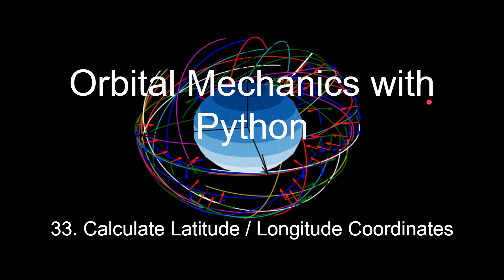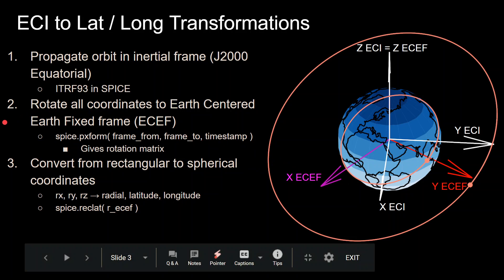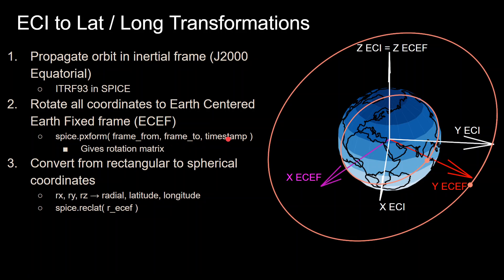This is the 33rd video in this series. I'm going to go over the Python functions you need to calculate latitude/longitude coordinates. As covered in previous videos, this is the whole algorithm: propagate in the inertial frame, then rotate those coordinates into the Earth-centered Earth-fixed (ECEF) frame using spice.pxform, giving it the frame you're coming from, the frame you want to go to, and the timestamp. That gives you a rotation matrix, which you use to calculate the ECEF position vector, then convert from rectangular to spherical coordinates to get latitude and longitude.